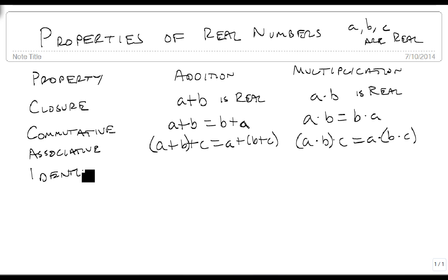We have what we call the identity property, and the idea behind identity is that it always returns what it's given. So for instance, for addition, if I add zero to a number, I still get A. But for multiplication, if I multiply by one, then I still get A.